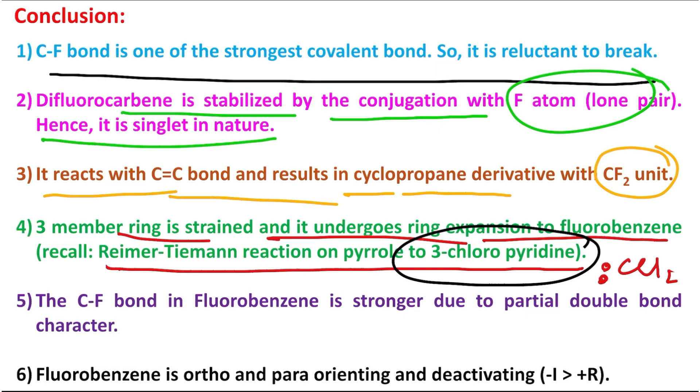Now C-F bond in fluorobenzene is stronger due to partial double bond character. What do I mean by the statement? So just look at here. This is a fluoro, this is a pi bond. So this lone pair, you can see, it could be donated here and it can go in this way ortho. Later on this negative charge could push and it can go there, it could be para.